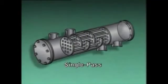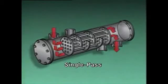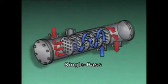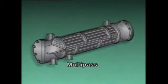The fluid on the tube side enters one head and exits from the other head. The shell side fluid enters here, flows in the opposite direction, and exits here. The two fluids pass each other only once. This heat exchanger is designed so that the tube side fluid passes the shell side fluid twice.